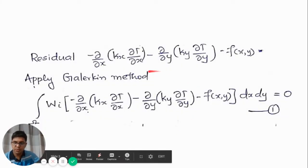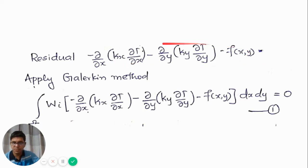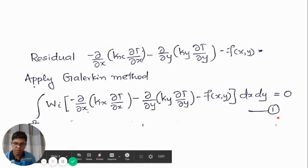From the differential equation you can write the residual as: minus d/dx(kx * dT/dx) minus d/dy(ky * dT/dy) minus f(x,y). If you have the exact solution then this will be equal to zero all over the domain. In the Galerkin method, we multiply this residual by a weight function, integrate it over the domain, and equate it to zero. This is represented by equation number one.